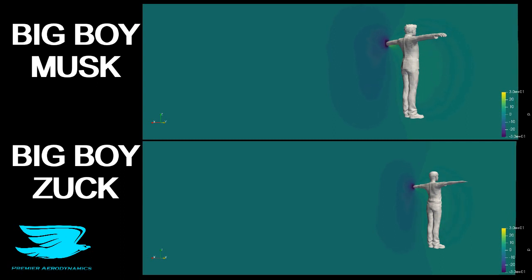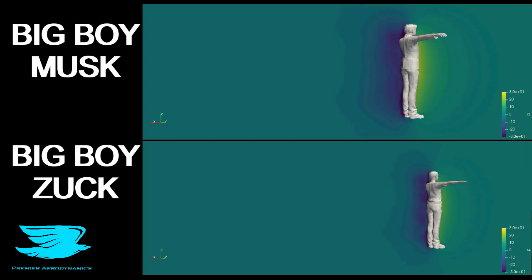On top of their heads, they both experience a local minima of pressure. Also, behind Zuckerberg's legs, there is a little bit of lower pressure than for Musk's. That would indicate that we have more drag produced by Zuck's legs than Musk's legs.